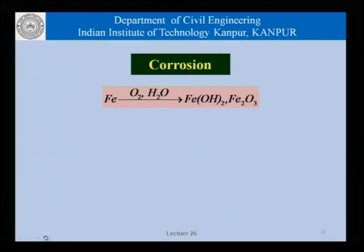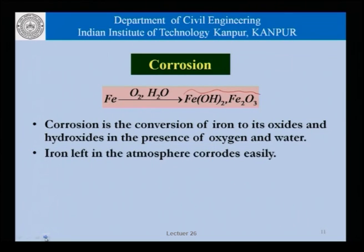As far as corrosion is concerned, what is the most fundamental understanding? Corrosion basically means the conversion of iron to its oxides and hydroxides in the presence of oxygen and water. There can be any number of hydroxides and oxides depending on how exactly the corrosion reaction proceeds, how much oxygen and water are present, the temperature, and so on. We know that iron left in the atmosphere corrodes easily — we just leave a steel bar in the atmosphere and very soon we find a layer of corrosion products deposited on its surface.